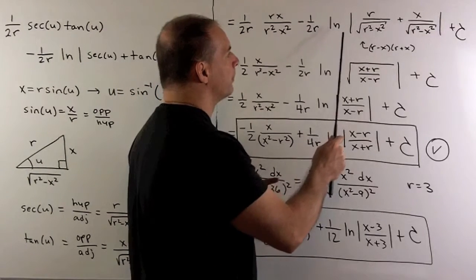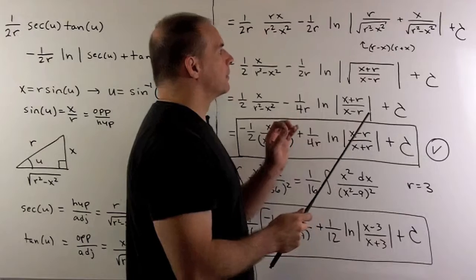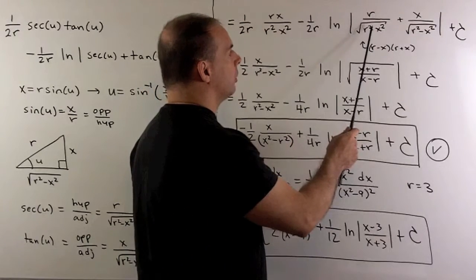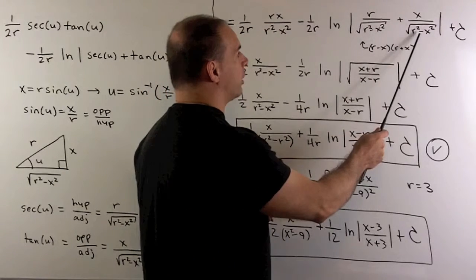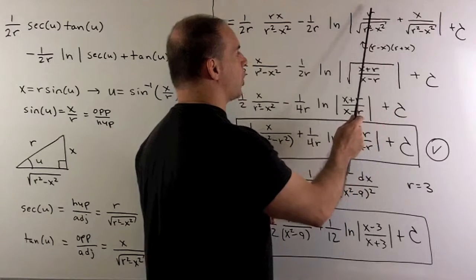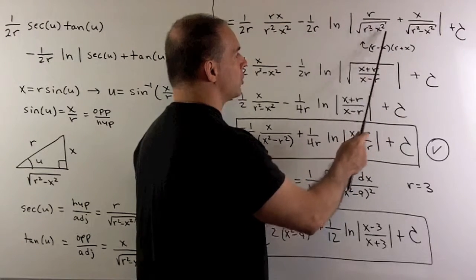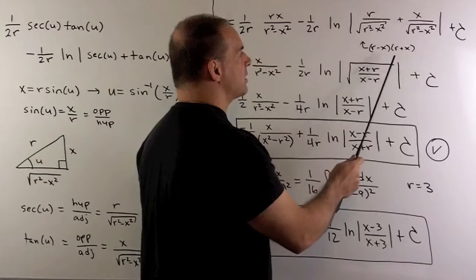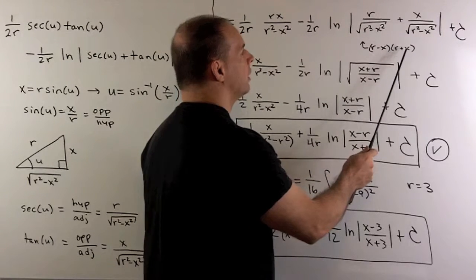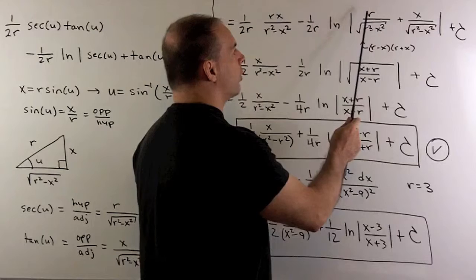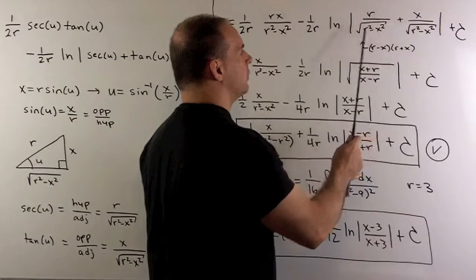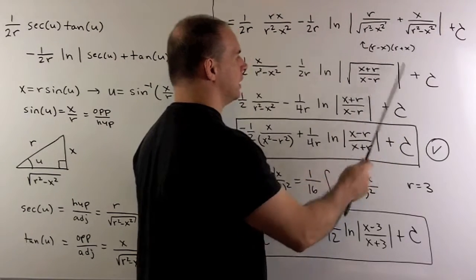For the term with the logarithm, okay, a few steps. First off, note we have a common denominator. So, I can think of this as x plus r. Now, if we factor what's under the square root, that's r minus x times r plus x. So, we really have a square root of r plus x on the top if we take one out of the bottom. So, we get to here.